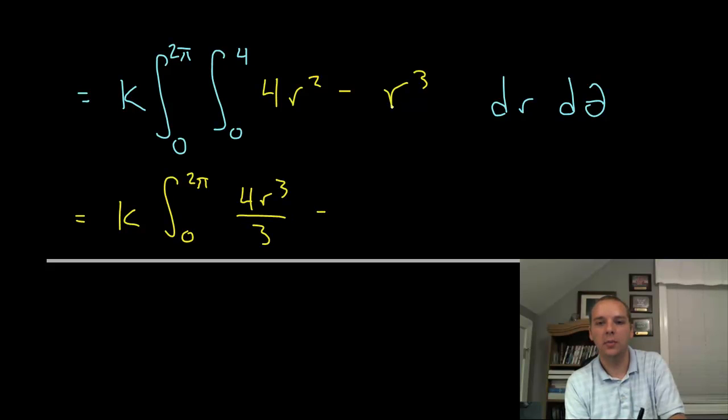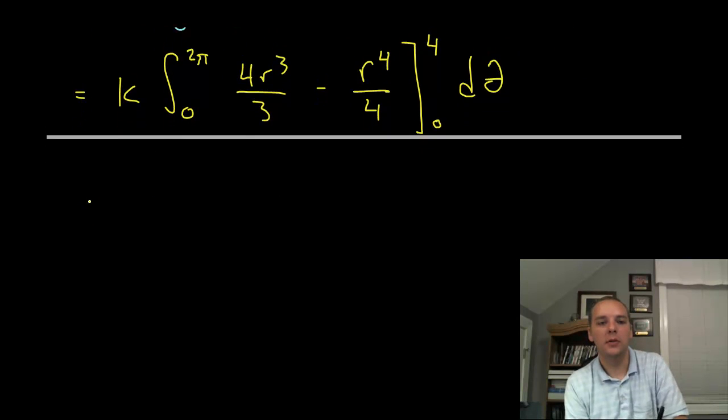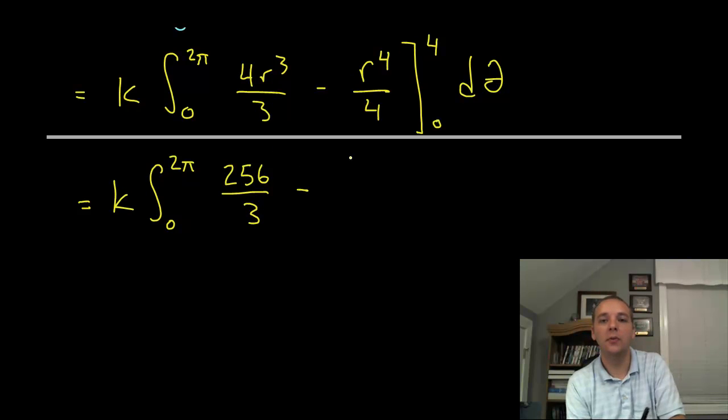Okay so we'd have k times the integral zero to two pi. Then integrating this would get four r cubed over three minus this would be r to the fourth over four. Bracket zero to four. D theta. D theta. Alright so then we get k times the integral zero to two pi. Four cubed is sixty four times four is two fifty six over three. Alright so then we have that over three. And then minus four to the fourth is two fifty six over four. D theta.